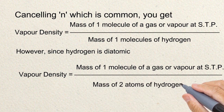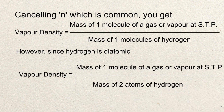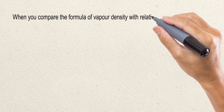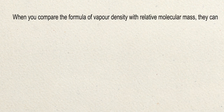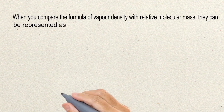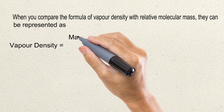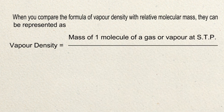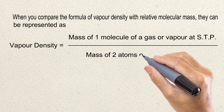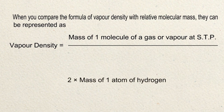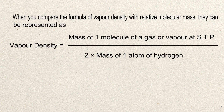So vapour density equals the mass of one molecule of gas or vapour at STP divided by two times the mass of one atom of hydrogen. When we compare the formula of vapour density with that of relative molecular mass, we can see that the mass of two atoms of hydrogen equals two times the mass of one atom of hydrogen.